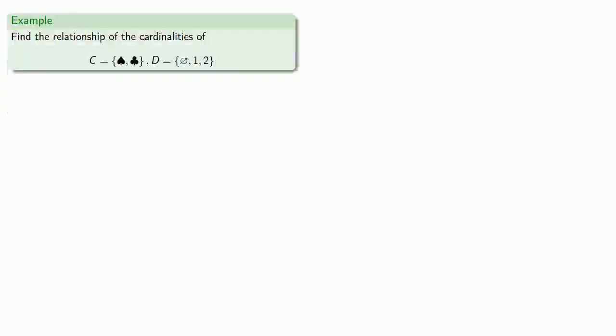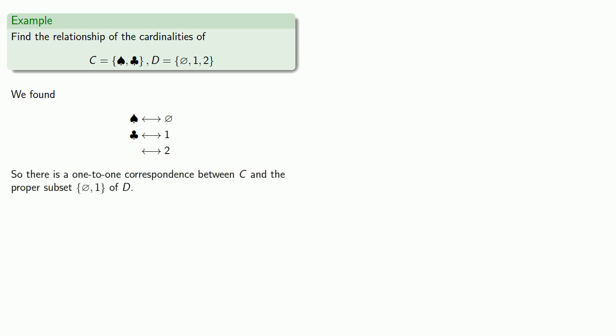For example, let's find the relationship of the cardinalities of these two sets. Earlier, when we tried to make a one-to-one correspondence, we found the correspondence but couldn't do anything with it at the time. But now we can. Since there is a one-to-one correspondence between C and a proper subset — namely this one — of D, then we know the cardinality of C is less than the cardinality of D.